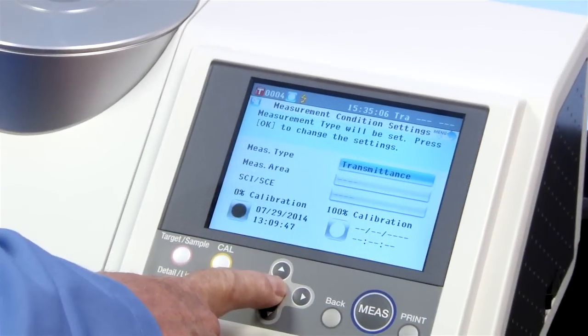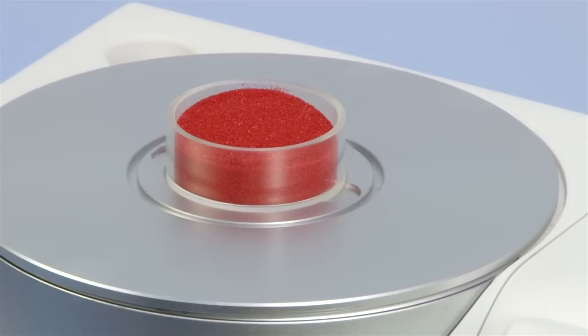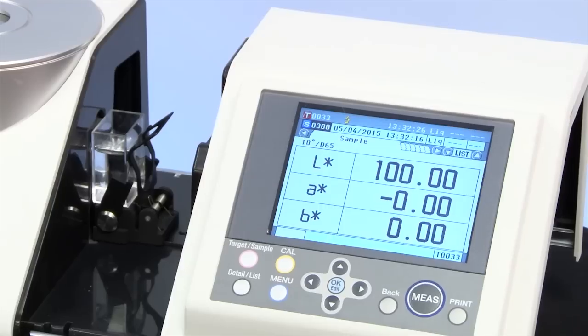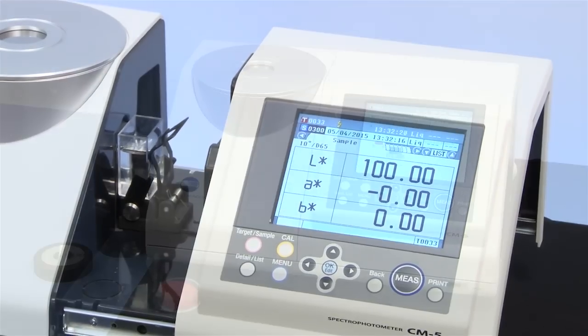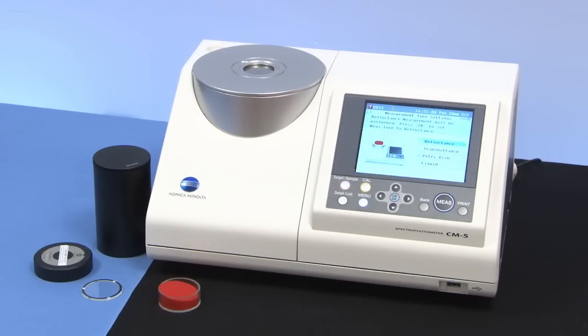Quickly switch various modes in reflectance or transmittance, including petri dish and liquid. Configure the CM5 to your measurement requirements.